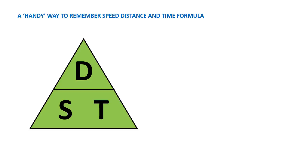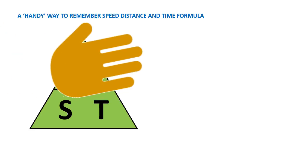D comes before S, which comes before T in the alphabet. To use the triangle, you cover up the variable that you want to know a formula for. So for example, if we want to find our formula for distance, cover up D, and you'll find that D is equal to S times T, or distance is equal to speed times time.